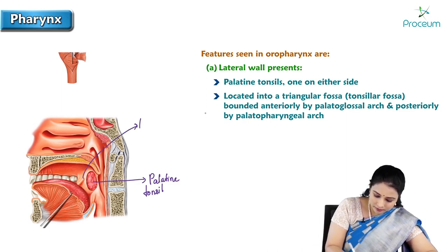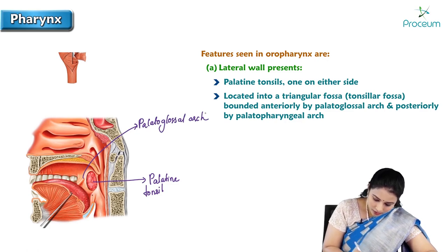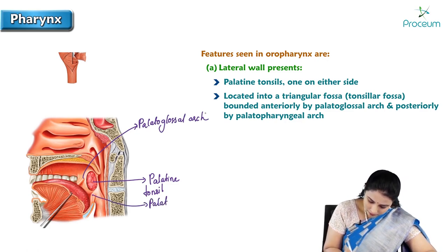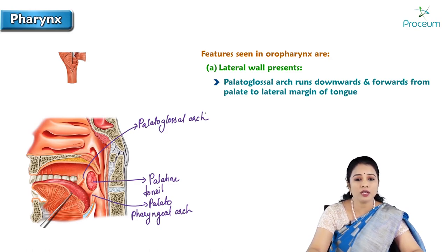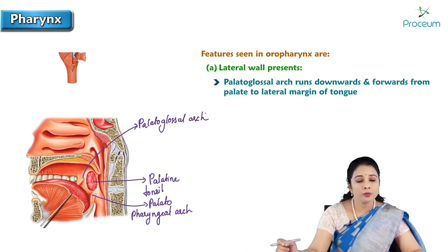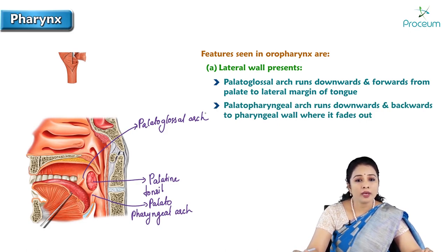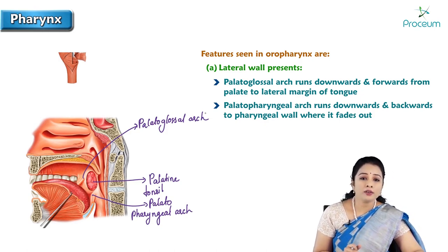This is the palatoglossal arch. The palatoglossal arch runs downwards and forwards from the soft palate to the lateral margin of the tongue, and contains the palatoglossus muscle. The palatopharyngeal arch runs downwards and backwards into the pharyngeal wall where it fades out. The palatopharyngeal arch contains the palatopharyngeus muscle.